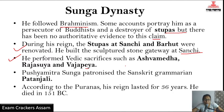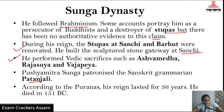He revived Vedic culture through sacrifices including Ashwamedha, Rajasuya, and Vajapeya. Pushyamitra Sunga also patronized Sanskrit grammar - the grammarian Patanjali flourished during his reign. According to the Puranas, his reign lasted for 36 years, and he died in 151 BC.